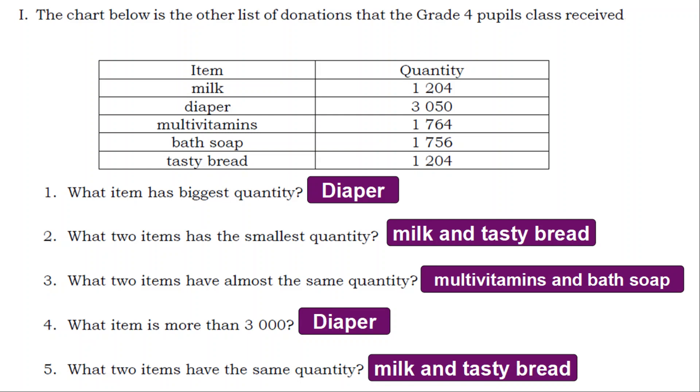2. What two items has the smallest quantity? Milk and Tasty Bread.